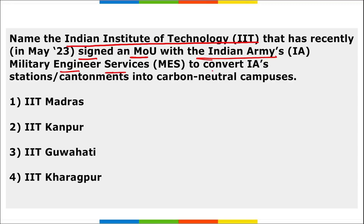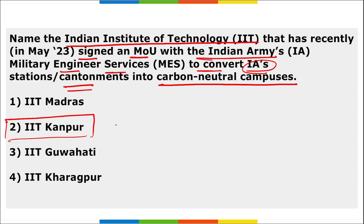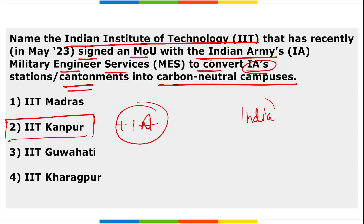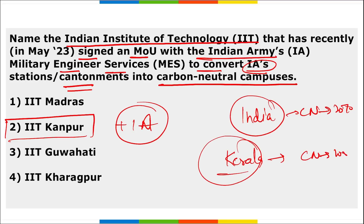IIT Kanpur signed an MOU with the Indian Army's Military Engineer Services to convert Indian Army stations and cantonments into carbon neutral campuses. India's target to become carbon neutral is 2070, while Kerala's target is 2050, with plans to shift to 100% renewable energy by 2040.